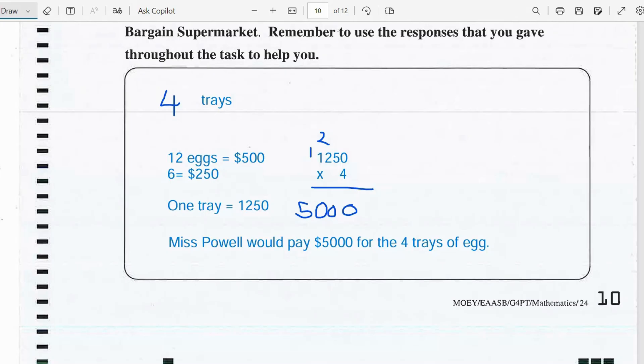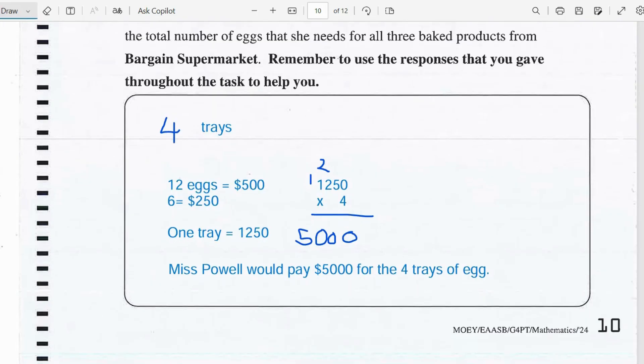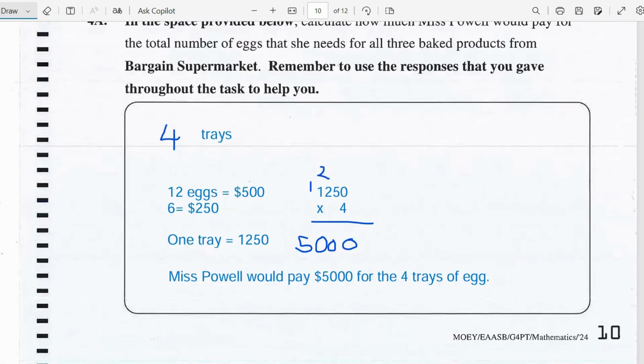And that would be $1,250. And if she needs 4 trays that would be $1,250 times 4 which is $5,000. So Ms. Powell would pay $5,000 for the 4 trays.